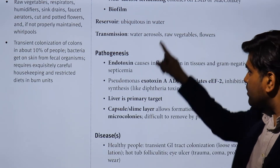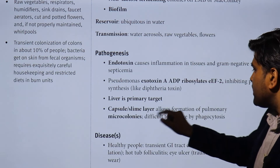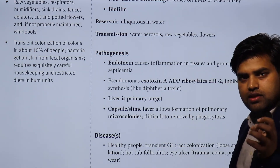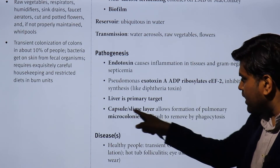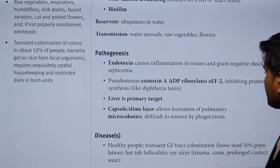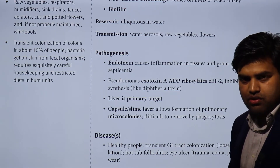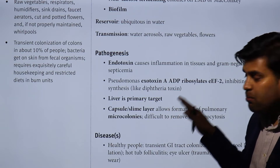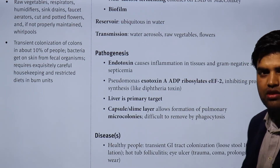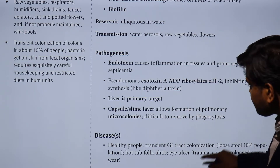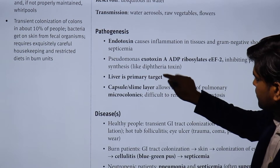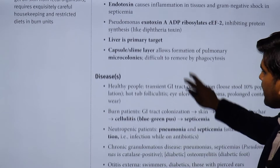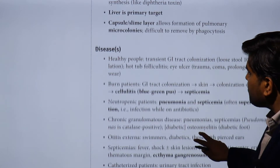Pseudomonas exotoxin A ADP-ribosylates elongation factor 2 to inhibit protein synthesis, with the liver as a primary target. The bacteria also have a slime layer or capsule that allows the formation of microcolonies in the lungs, making them difficult to remove by phagocytosis. Patients with cystic fibrosis are very prone to getting infected with Pseudomonas due to this capsule and slime layer that facilitates microcolony formation and resistance to phagocytosis.